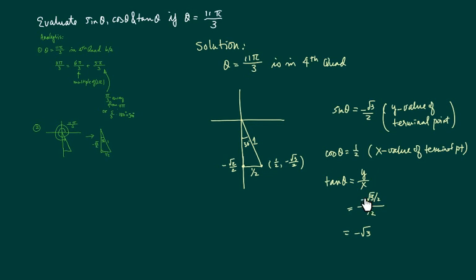Tangent is y over x. And that's minus square root of 3. Well, I hope this helps.